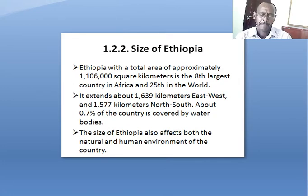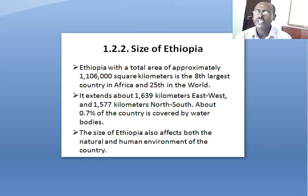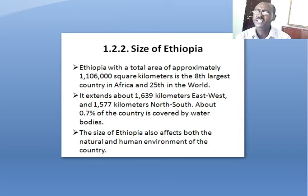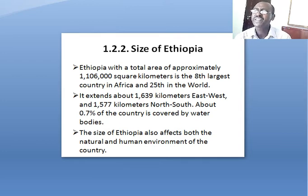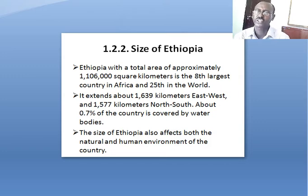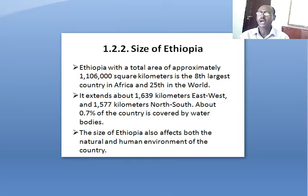Ethiopia is the largest country in the Horn in terms of size. It has a total area of approximately 1,106,000 square kilometers and is the eighth largest country in Africa and the 20th largest country in the world. It extends about 1,639 kilometers east-west and 1,570 kilometers north-south.